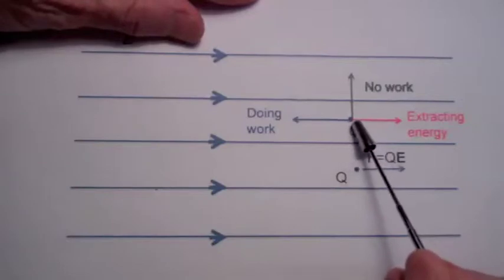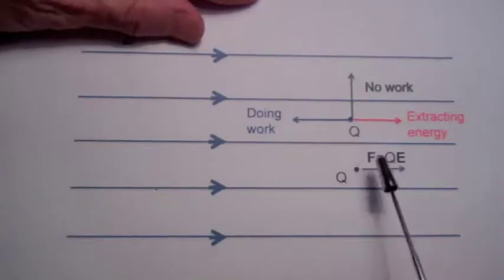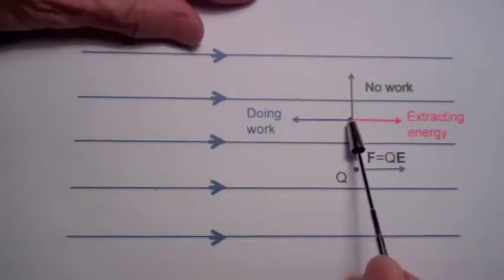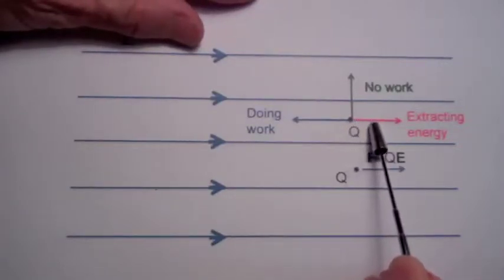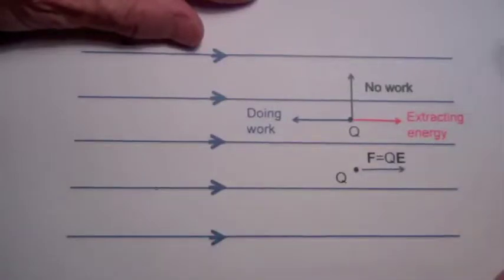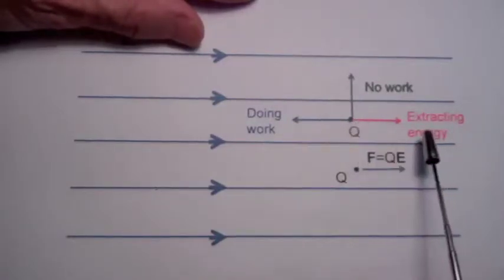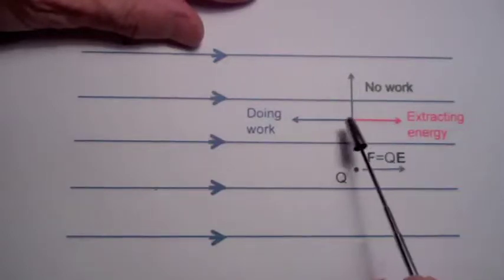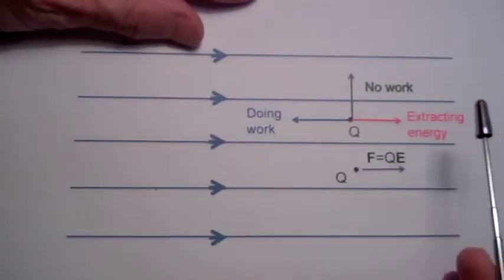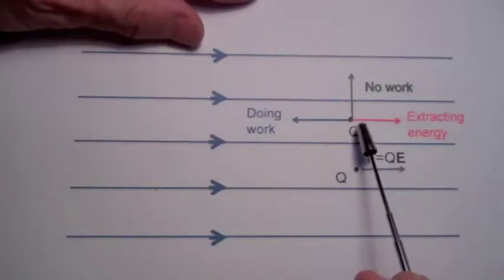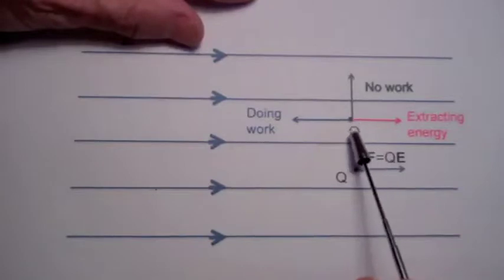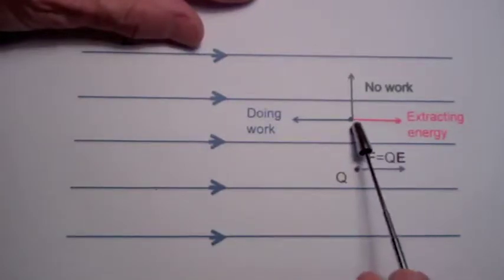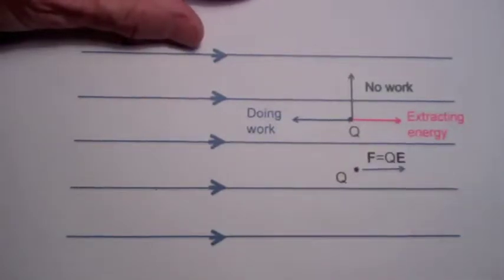Now, if we let the charge go, there is a force due to the electric field, so it will accelerate to the right, and so it is gaining kinetic energy. The electric field is doing work on the charge and converting the potential energy into kinetic energy as the charge moves to the right.